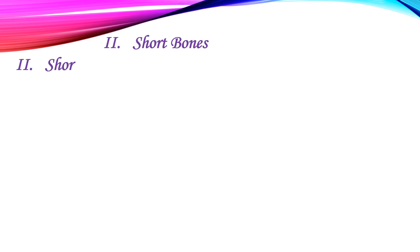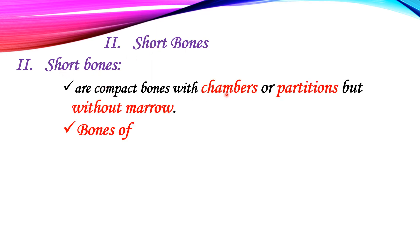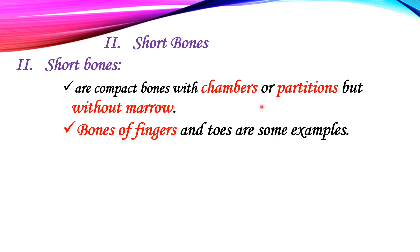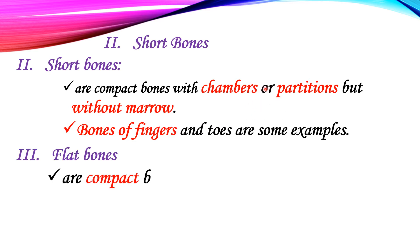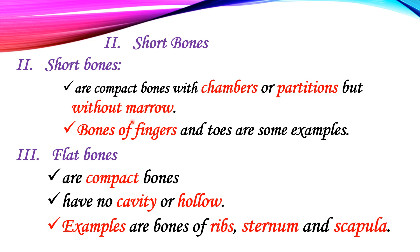The second type is known as short bones. Short bones are compact with chambers or partitions, but without bone marrow. Bones of the fingers are examples of short bones.